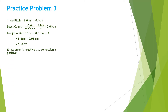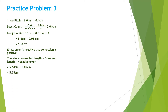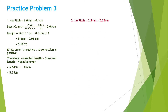As there is a negative error, the correction will be positive. Therefore, the corrected length is observed length plus the negative error value. That is 5.68 centimeter plus 0.07 centimeter, which comes to be 5.75 centimeter.